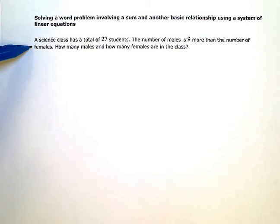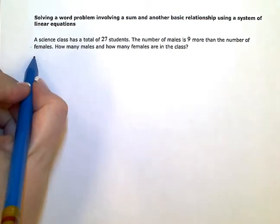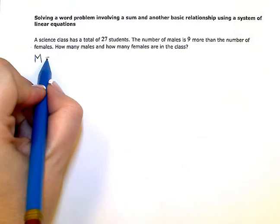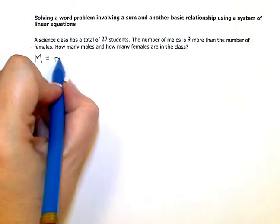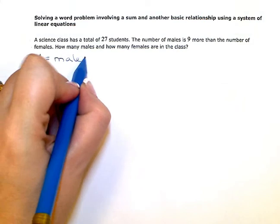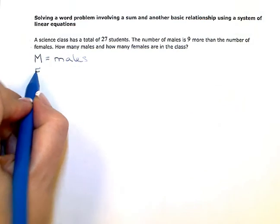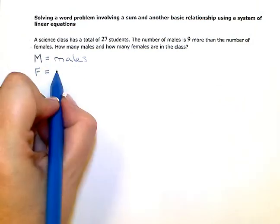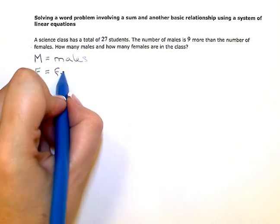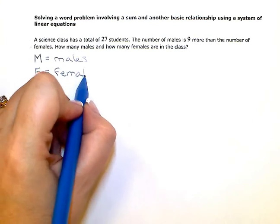I'm going to use M to designate or stand for the number of males, and I'll use F to stand for the number of females in the class.